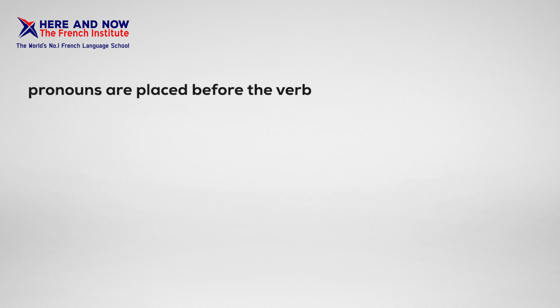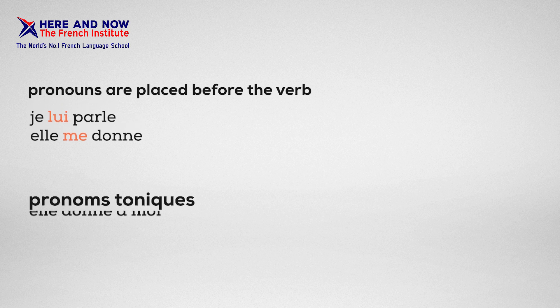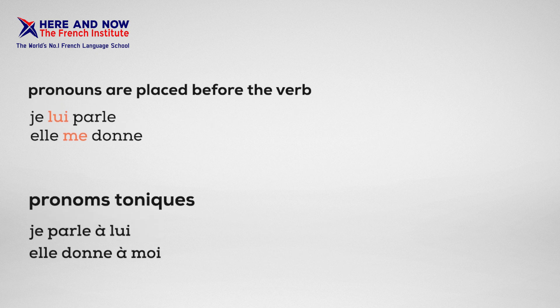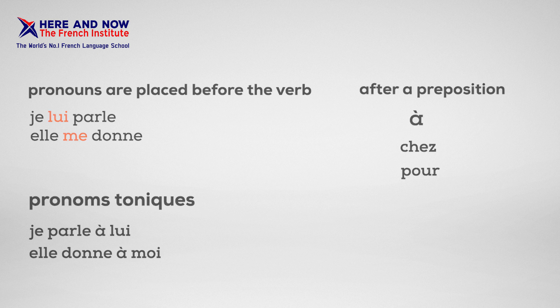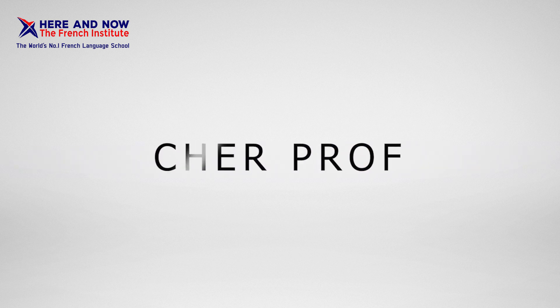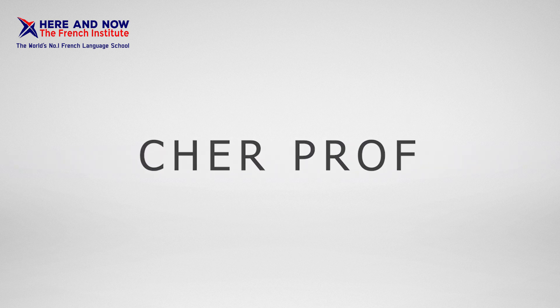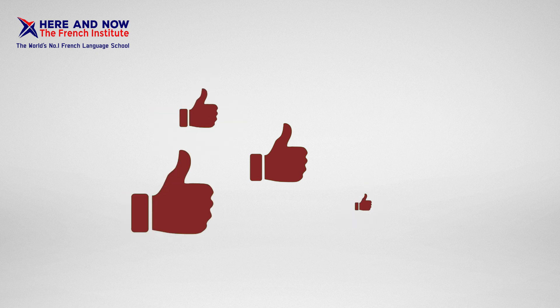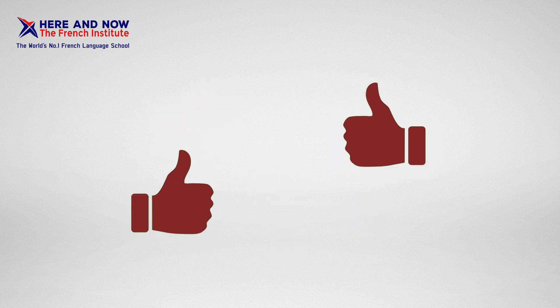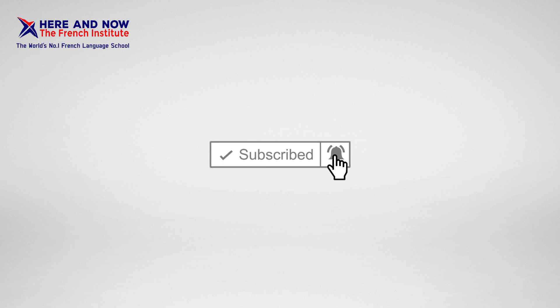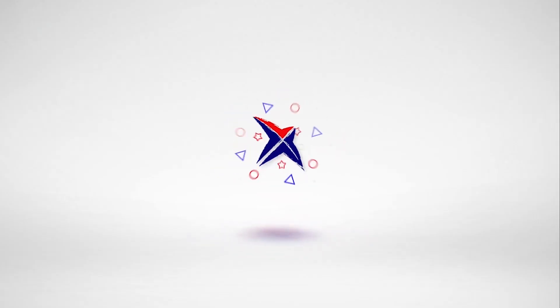Have you observed something? All pronouns are placed before the verb, except for the pronom tonique, which is placed after a preposition like 'à', 'chez', 'pour'. That's it — we've come to the end of this episode of ShareProf. If you found this useful, please like the video, share it if it could help someone, and don't forget to subscribe to Here and Now, the French Institute. Au revoir, happy learning French!